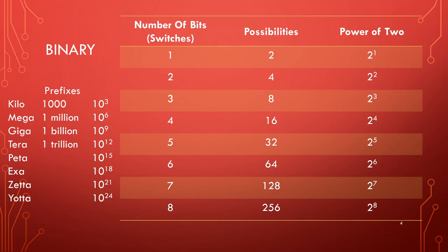Ones are high, zeros are low. That would be 2 to the power of 1 — two possible combinations, one space — so you get two possibilities. If we had two spots, there would be four possibilities: 00, 01, 10, or 11. That's the best way to figure it out: 2 to the second power on a calculator. We could go down the list all the way.